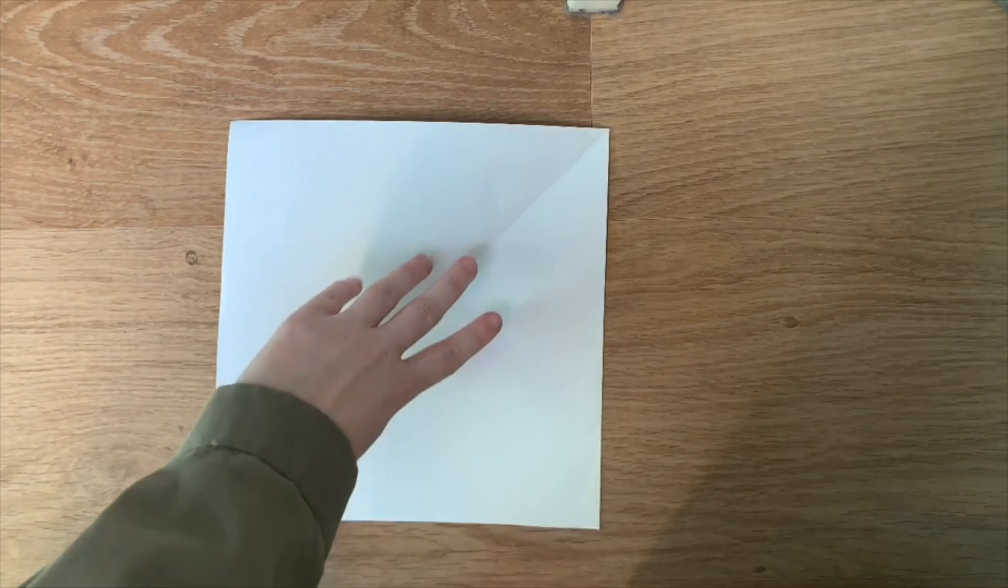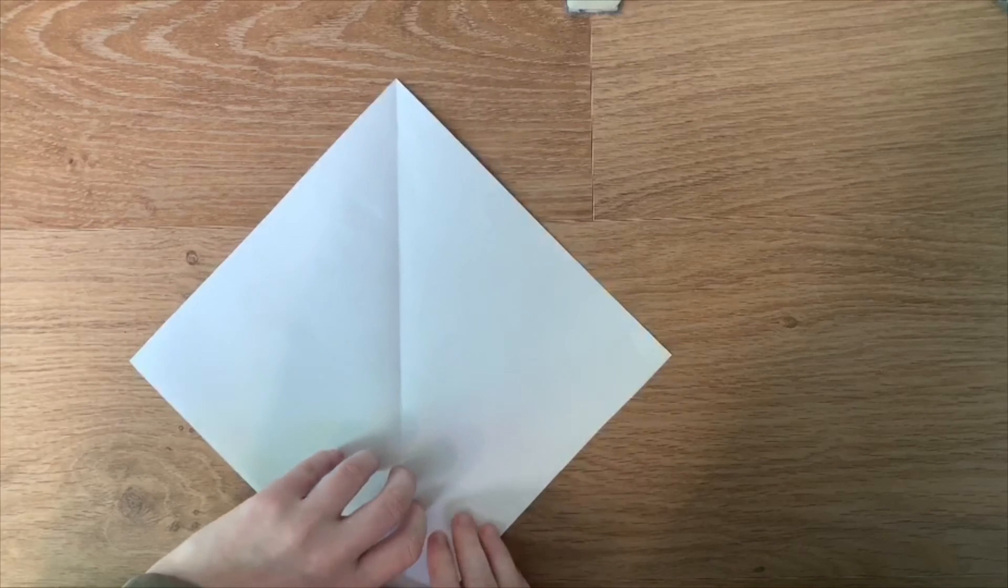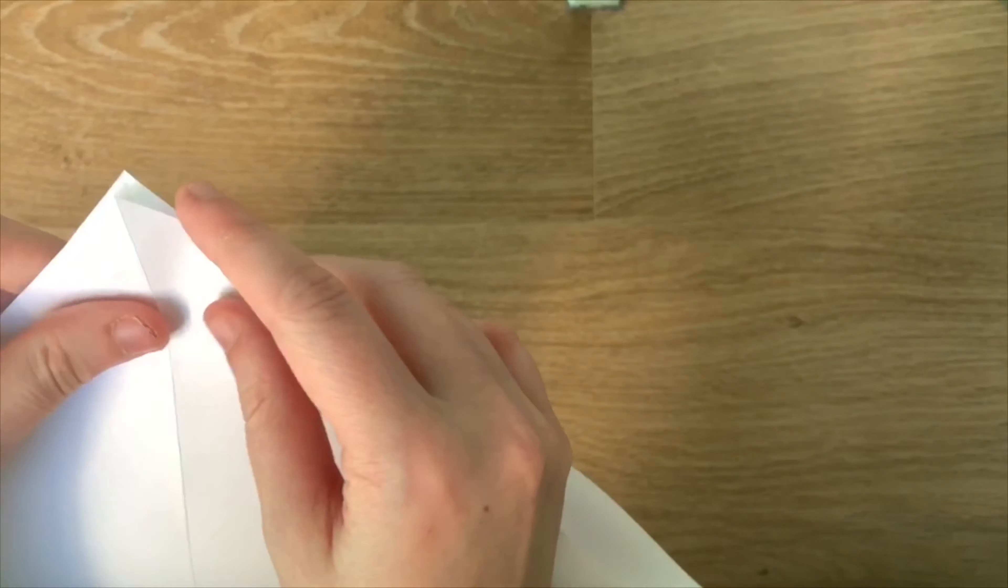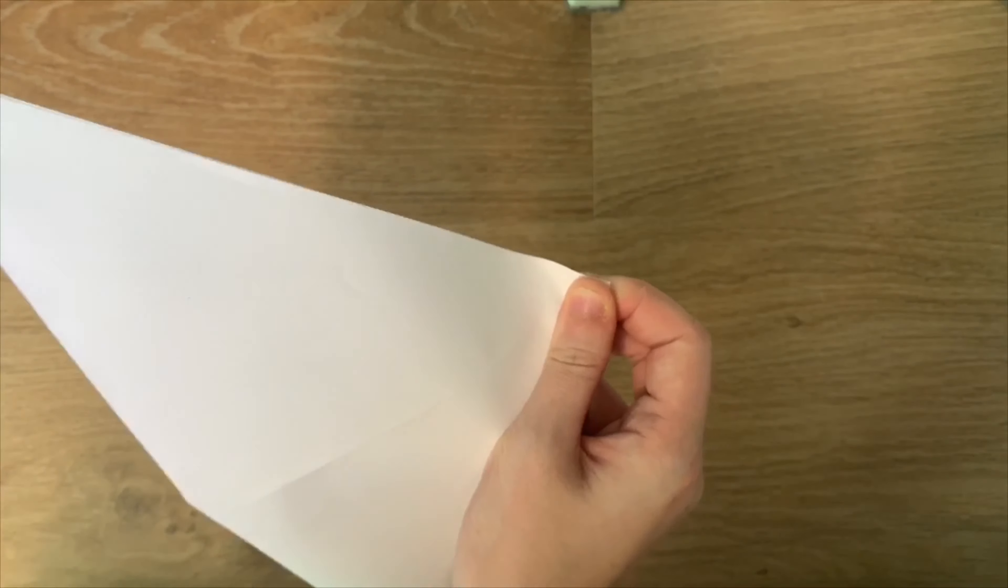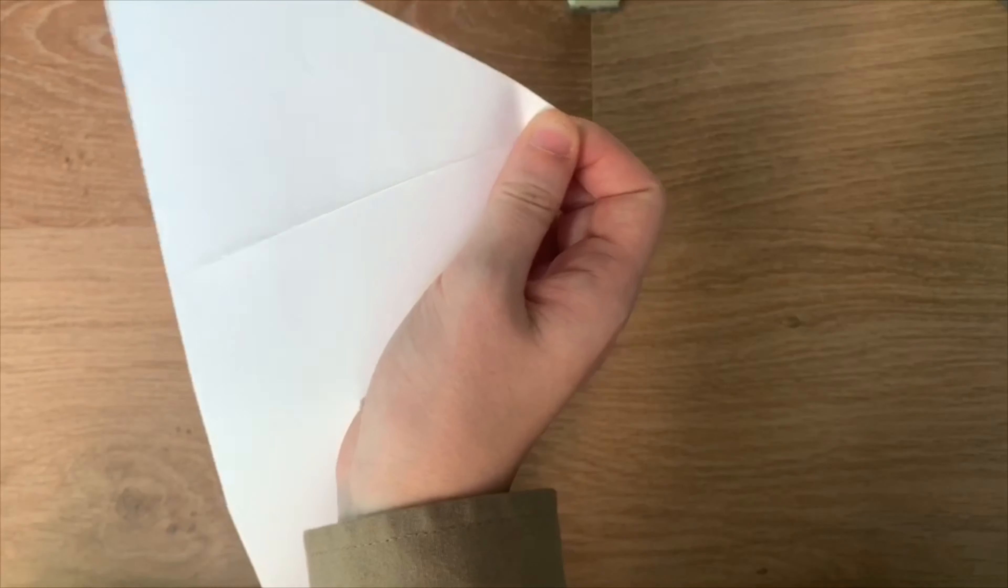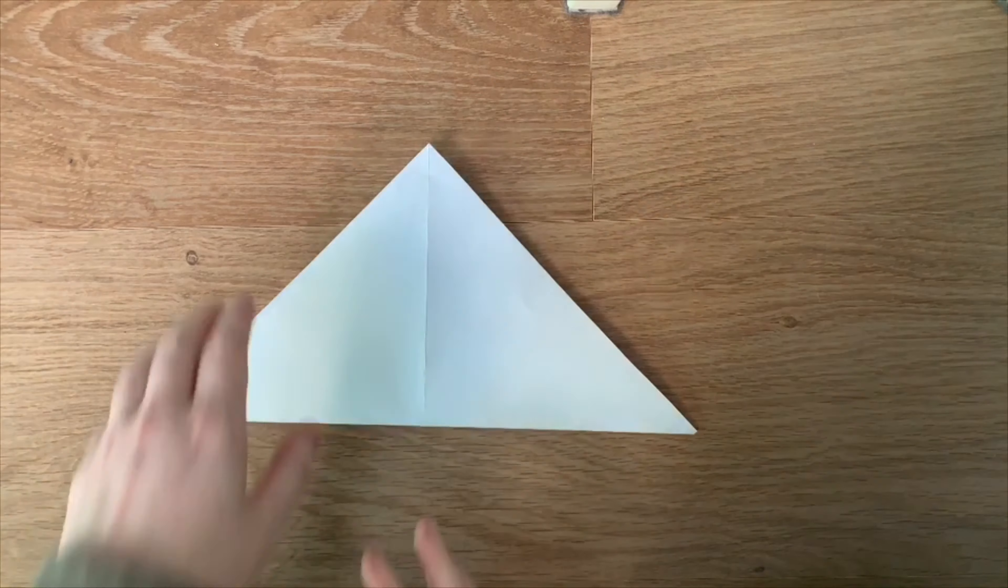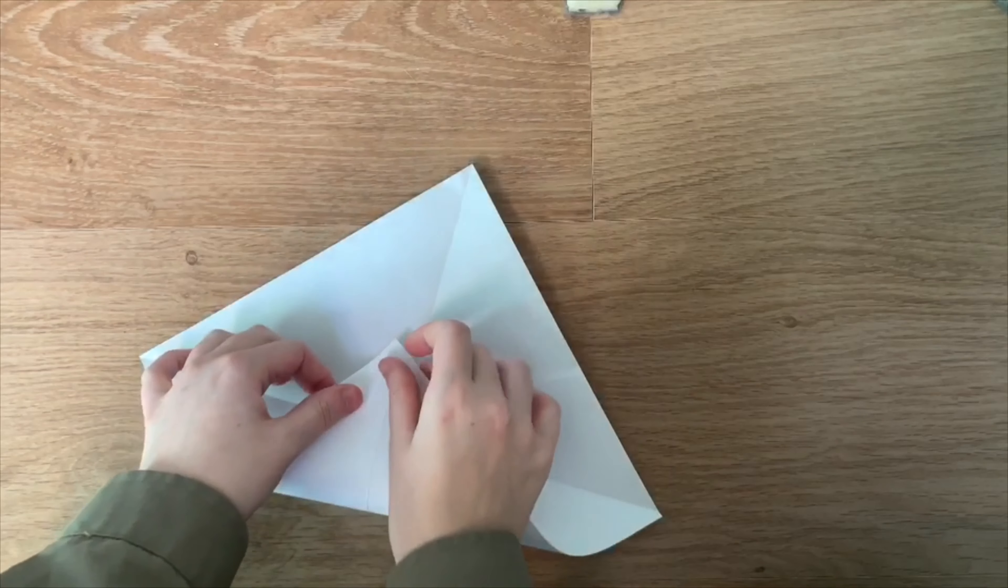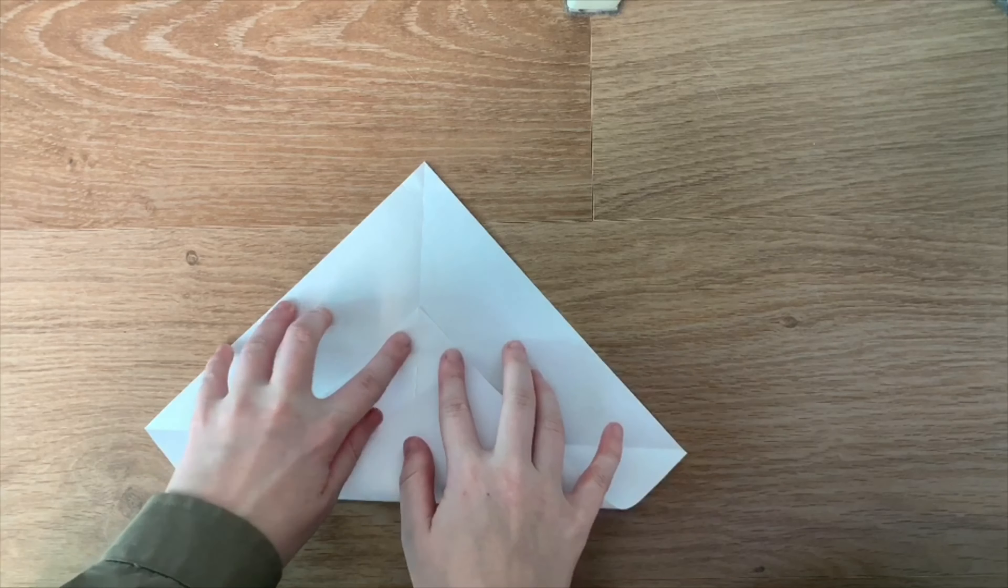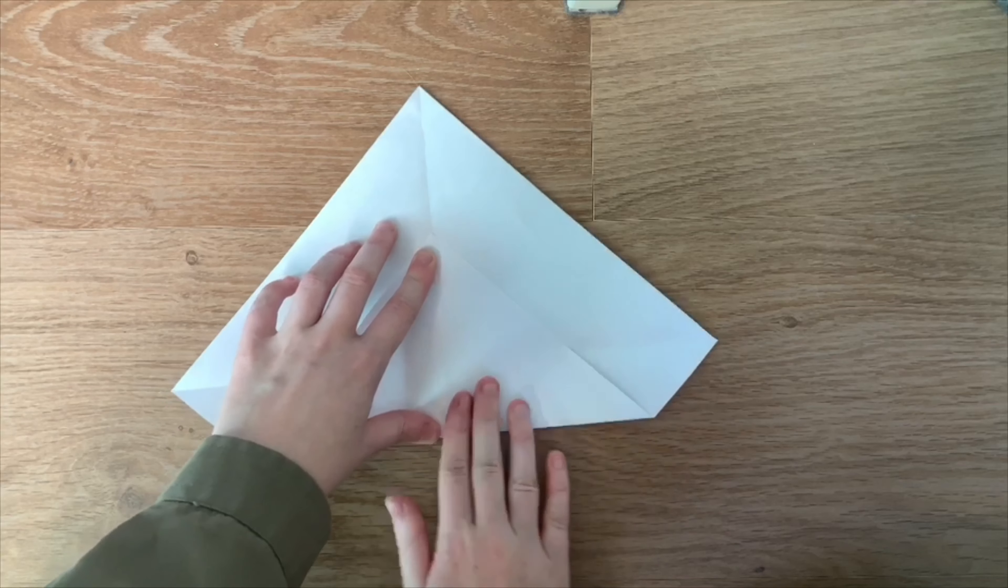From here, we need to do what we did last time where we make the crease along here as well. So just take up your top corner and make the crease. Okay, so now we have this. Now, just like we did with the penguin, we're going to take this bottom corner and fold it halfway up in between the center crease and the top corner.